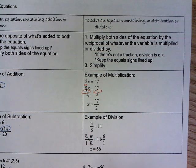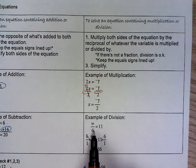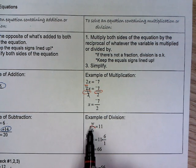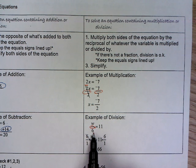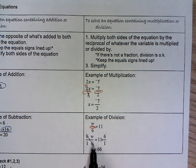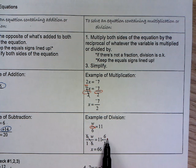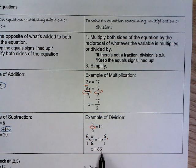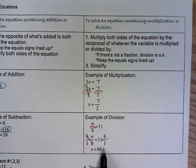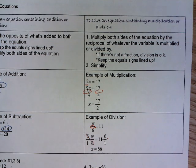On our last example written out, it has w divided by 6 equals 11. Because I'm dividing, I'm going to multiply both sides by 6. These cancel out, and w equals 66.